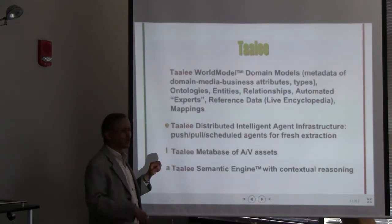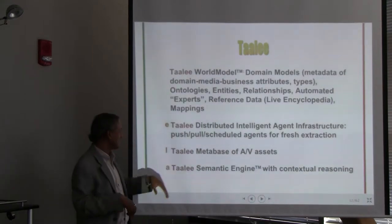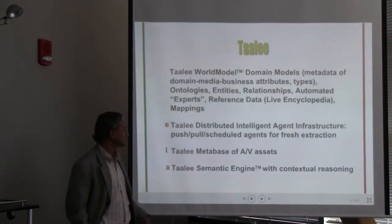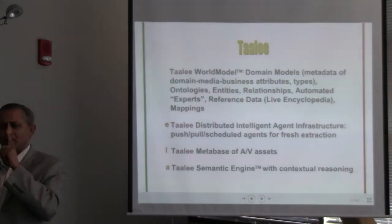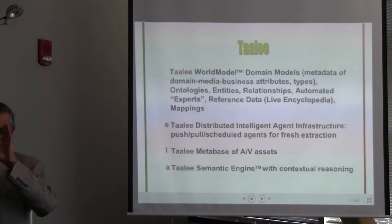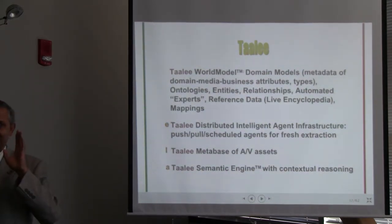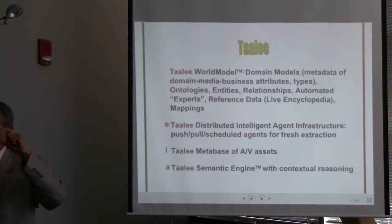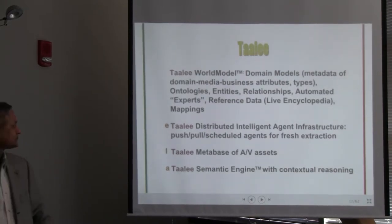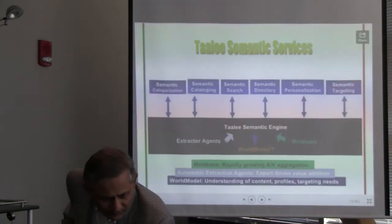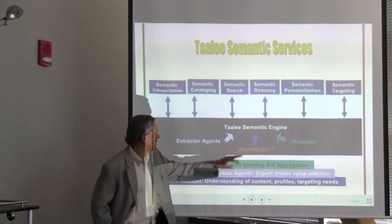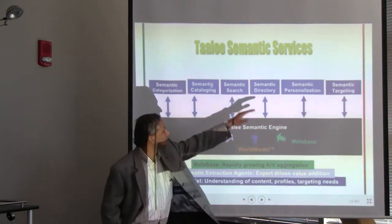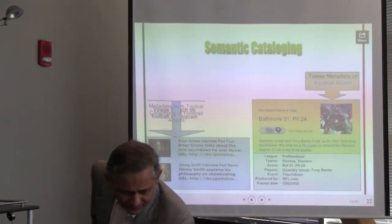In the year 2000, we were able to process 1 million pages per hour per server on dual-processing machines. That is described in another paper from 2002. You can see the variety of applications that were built. Here's an interesting example: when you search for a video on 'touchdown,' the concept of what is in a game is in the ontology, and the touchdown event as part of a football game is there. Those kinds of things were pulled out.